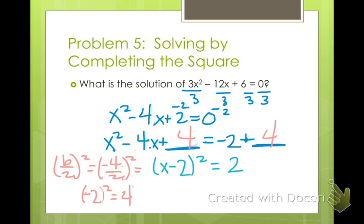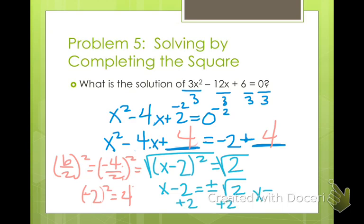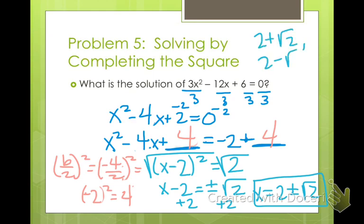Now square root both sides. So I get x minus 2 equals plus or minus the square root of 2, because I know I have both the positive and negative solution. To get x by itself, we add 2 to both sides. So x equals 2 plus or minus the square root of 2 — both solutions. Math Excel may want you to write it as 2 plus the square root of 2 and 2 minus the square root of 2, since they may think you don't understand what plus or minus means. But plus or minus means you add once and subtract once.